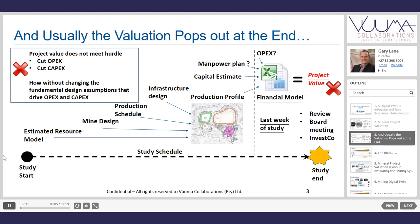In a typical study, once the project team is assembled, all these different silos of work get done. You have a resource model as input into a mine design, which takes quite a long time and is generally on the critical path. You then do the production schedule, infrastructure design, and a capital estimate to a fairly good level depending on the study phase. There should be a manpower plan and ideally a proper activity-based costing model that accounts for all actual activity costs — not just an assumption for OPEX, as was common in the past.